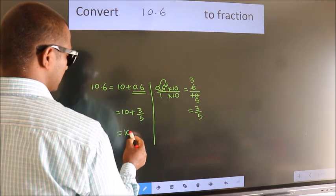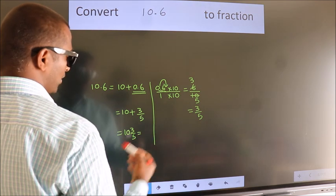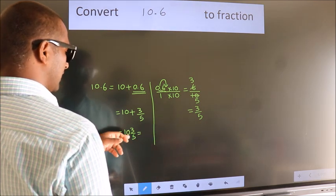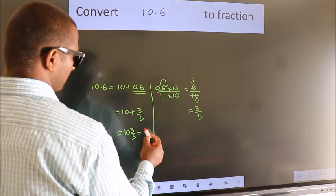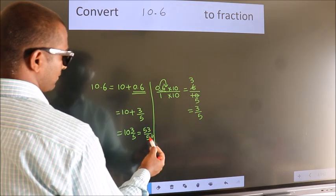In mixed fraction it is 10 3 over 5. In improper fraction it is 10 into 5, 50 plus 3, 53 by 5 is our fraction.